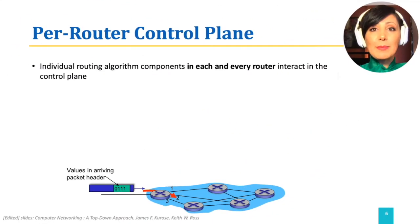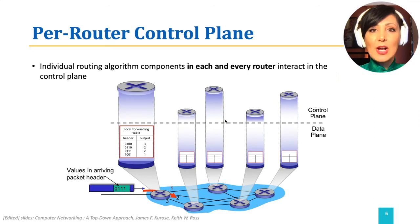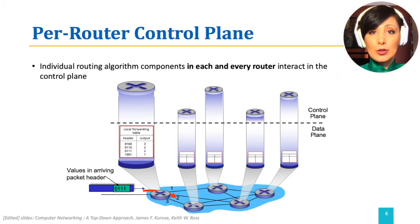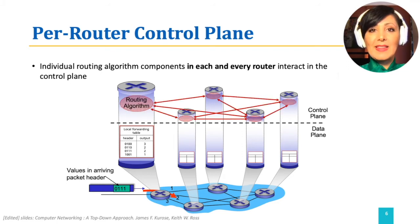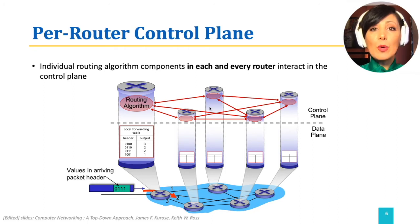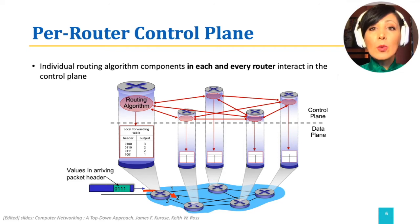In the distributed approach, or the per-router control plane, which is the traditional approach, individual routing algorithm components run in each and every router, and they interact with each other in the control plane. They exchange information to converge on routing decisions, and write the forwarding tables in the data plane on the local router based on the routing decisions.